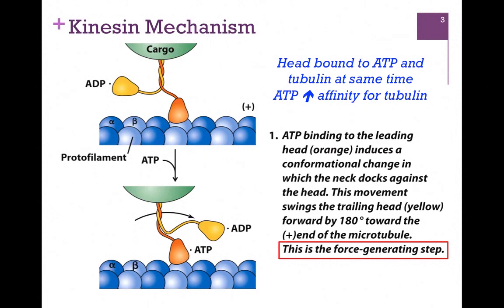The first step in our sequence is the same as myosin - we're going to bind ATP - but the effect is very different. With myosin, when that head bound ATP, it let go of the actin. With kinesin, however, once that head binds ATP, it grabs on more tightly to that beta subunit. That produces a little bit of a kink in the neck, and that causes the trailing head in yellow to swing forward by about 180 degrees.